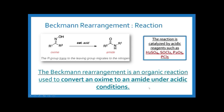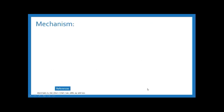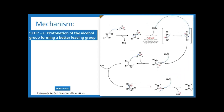Now let us see the mechanism of how Beckmann rearrangement occurs. The first step is protonation of the alcohol group, forming a better leaving group. The OH group is considered a poor leaving group, so to make it a better leaving group, the lone pair on oxygen abstracts a proton from the hydronium ion, protonating the OH group.